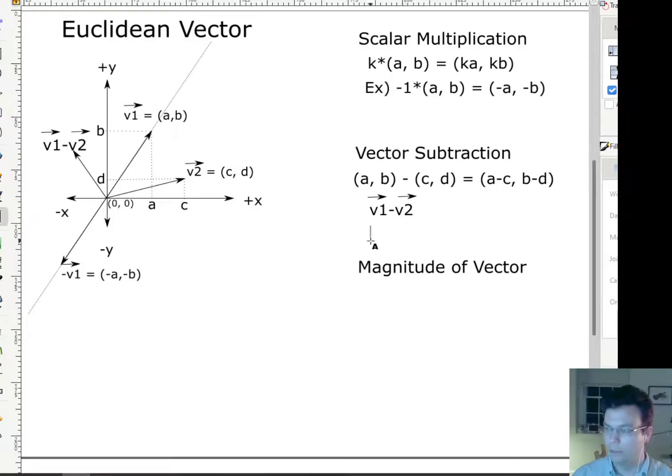Well, we talked about that. That's actually the negative of v1 - v2. So v2 - v1 is going to be the same vector, but pointing the opposite direction. So it's actually a vector that goes from v1 to v2. So it starts at the tip of v1, ends up at the tip of v2.